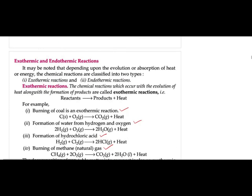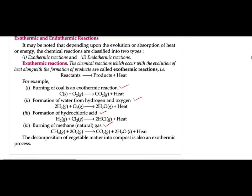Next we study exothermic and endothermic reactions. Depending on the evolution or absorption of heat or energy, chemical reactions are classified into two types. Exothermic reactions are those in which heat is evolved — the reactants produce heat on decomposition or combination. Examples are: burning of coal, formation of water from hydrogen and oxygen, formation of hydrochloric acid, and burning of methane gas — methane plus oxygen gives carbon dioxide plus water plus heat.